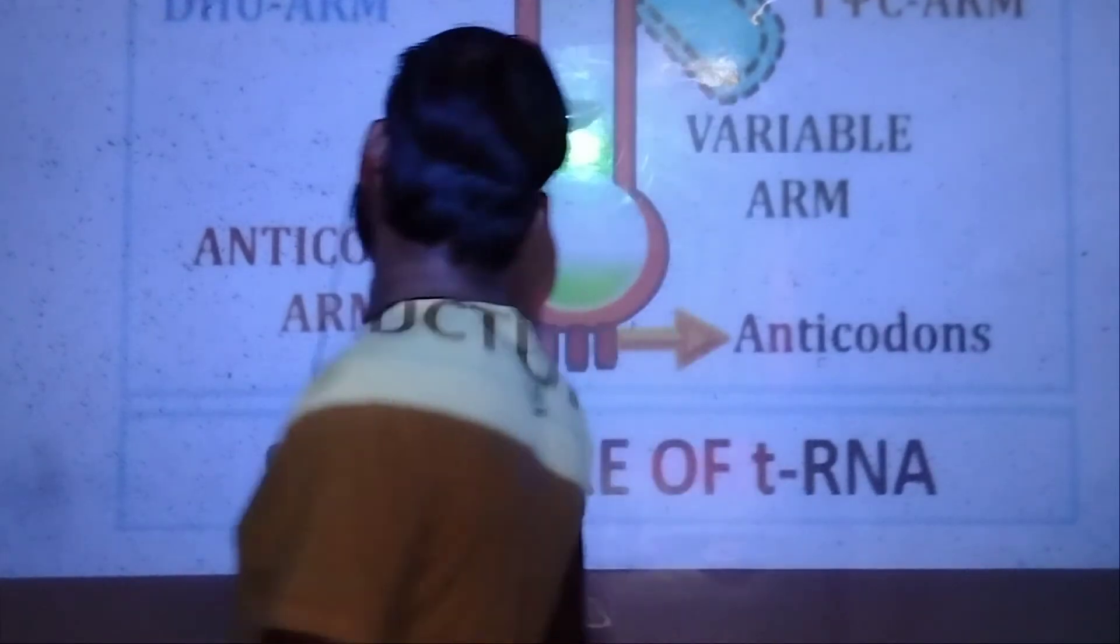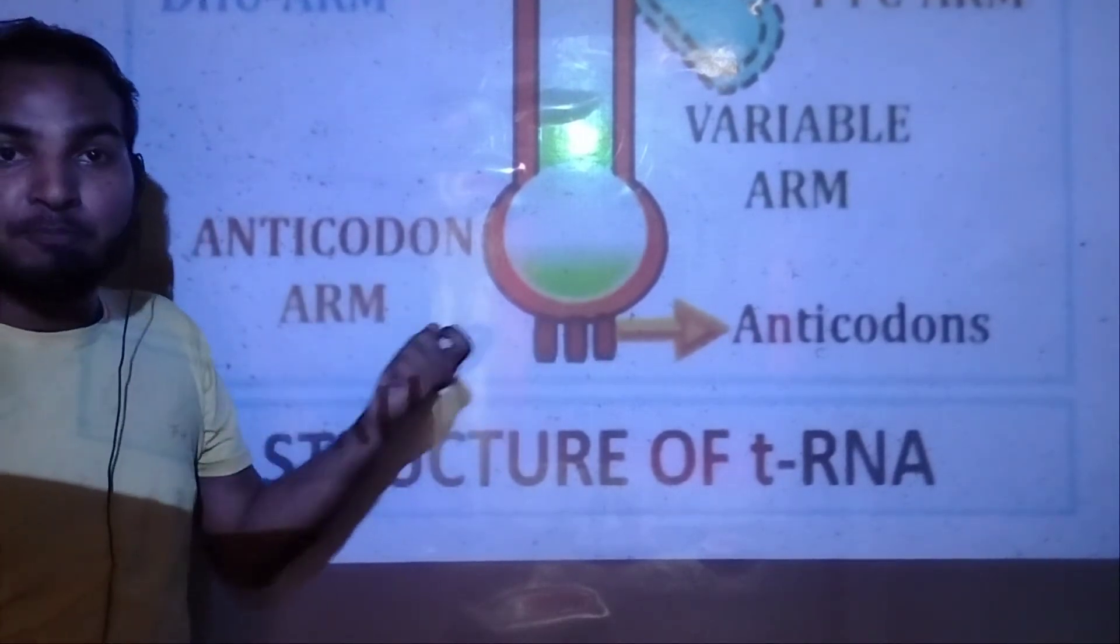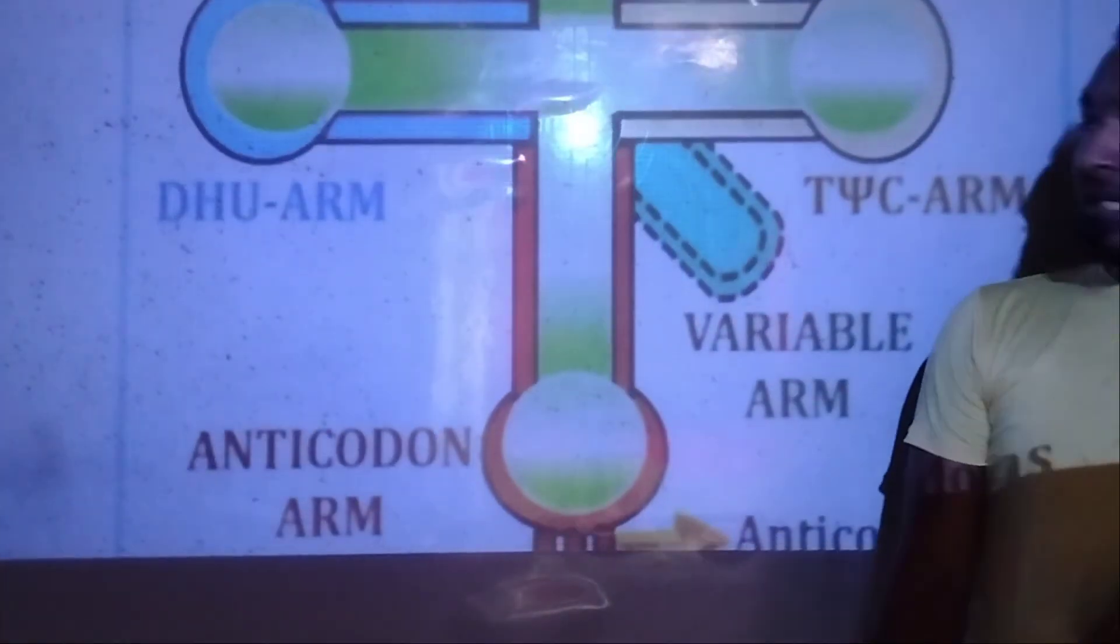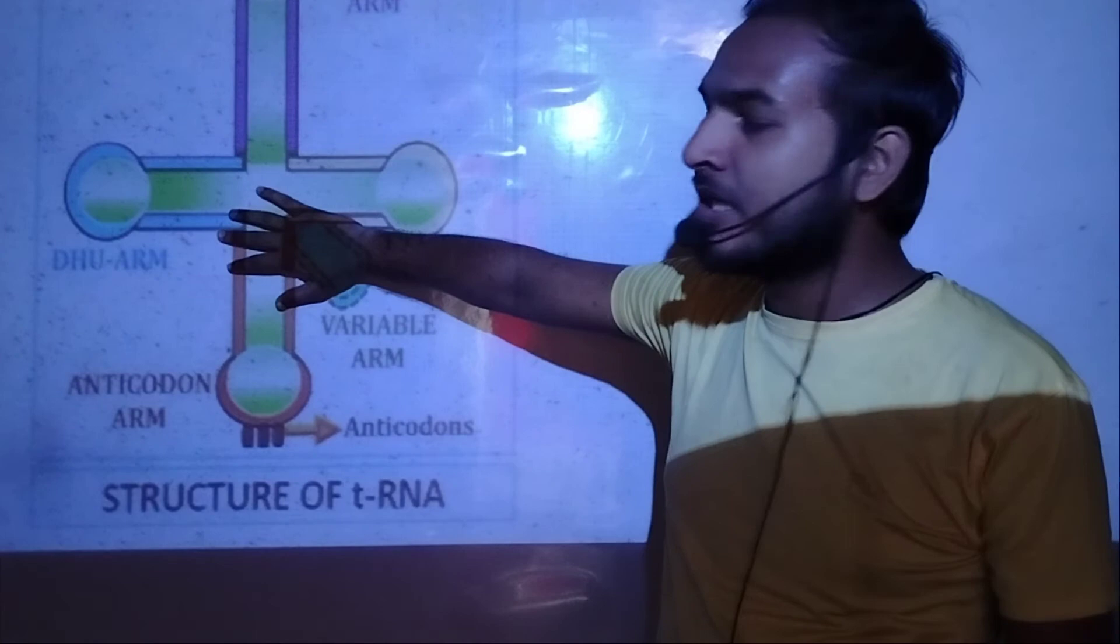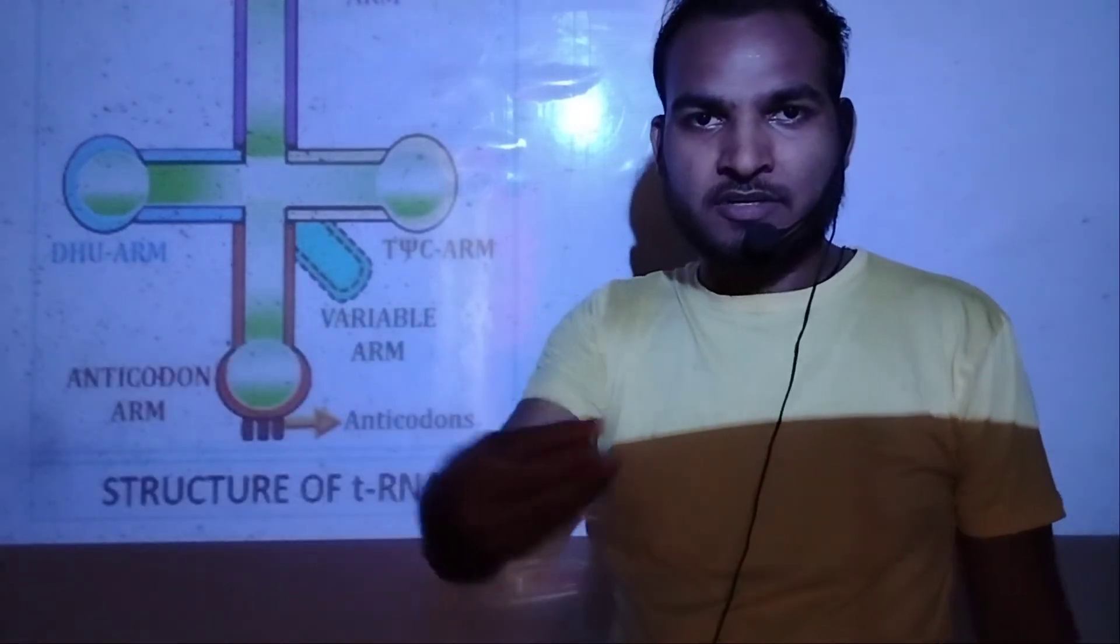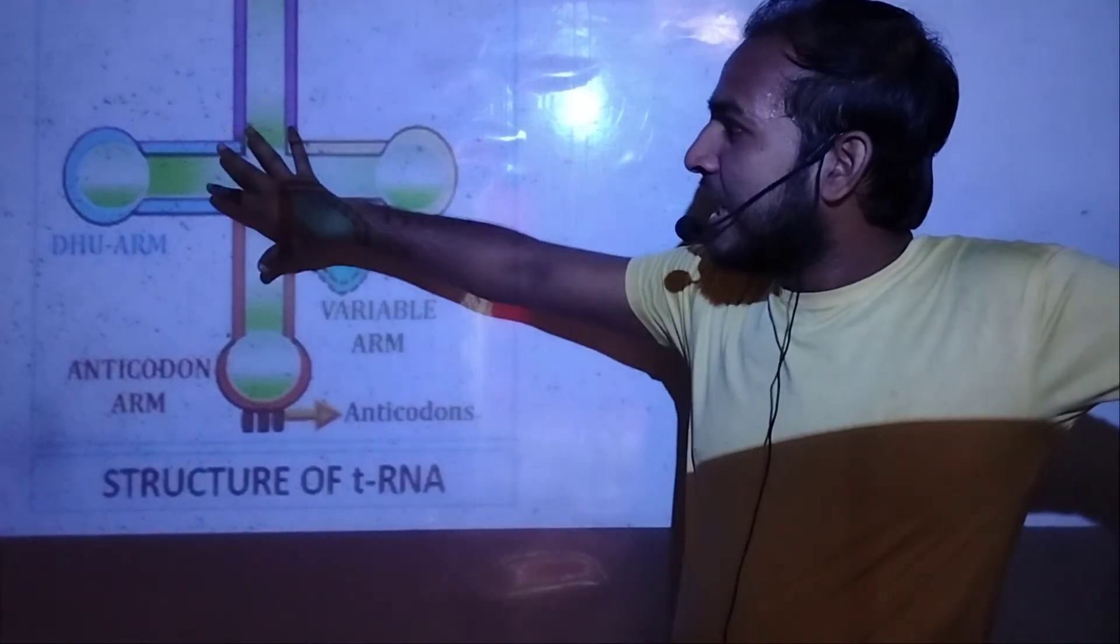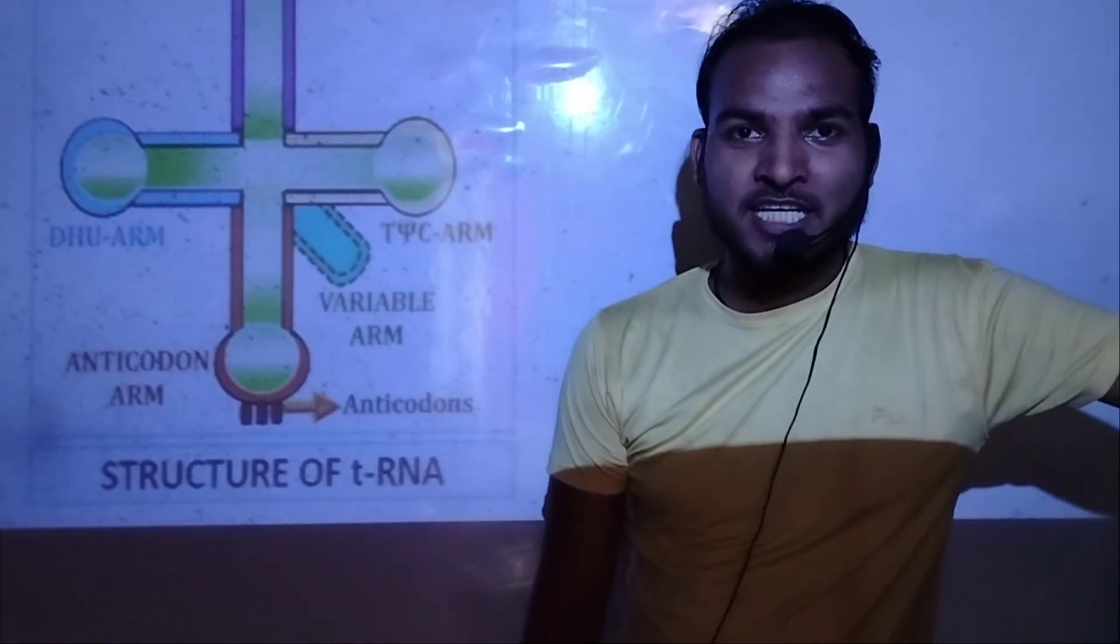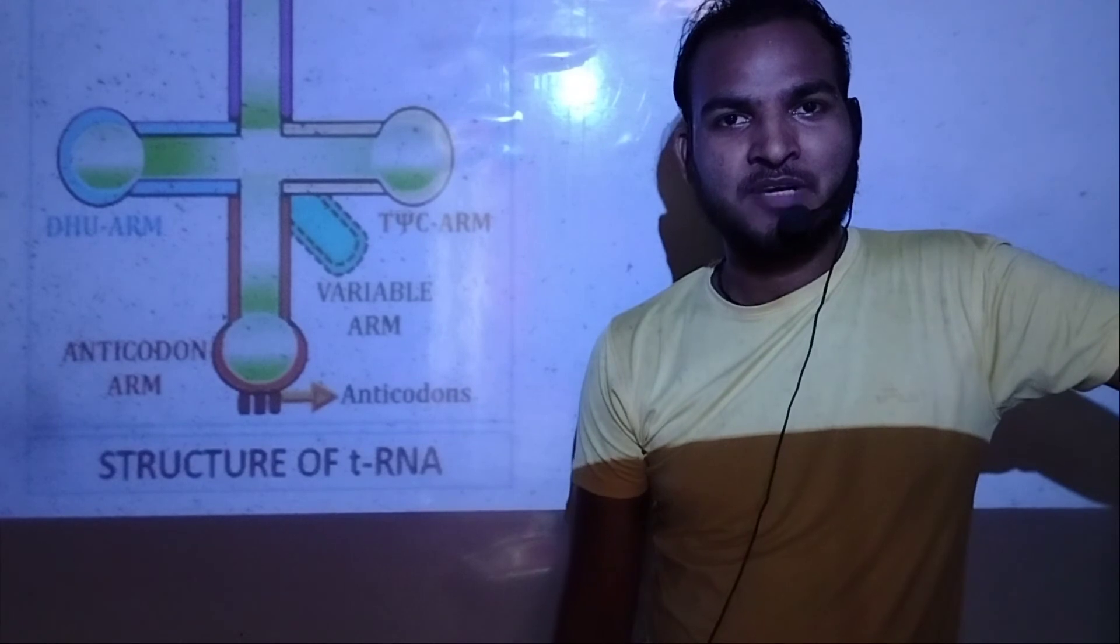The last arm is called DHU, which is called DHU because it has the nitrogenous base dihydrouridine. The tRNA has one more arm which has no specific work, called the variable arm or extra arm.